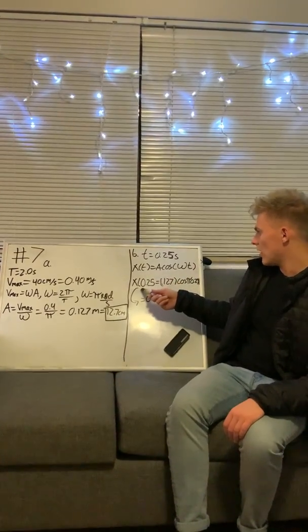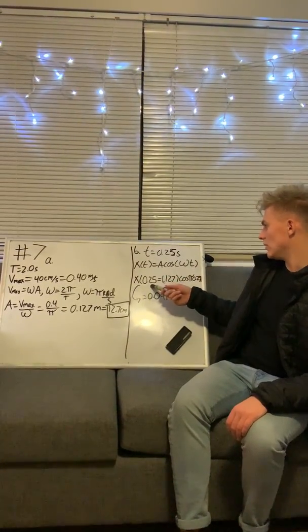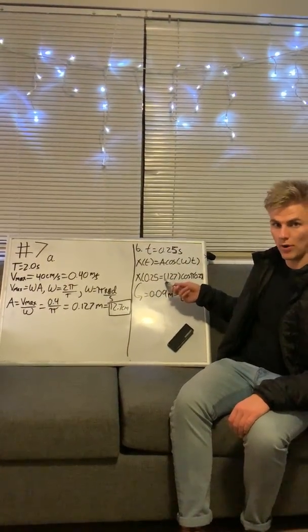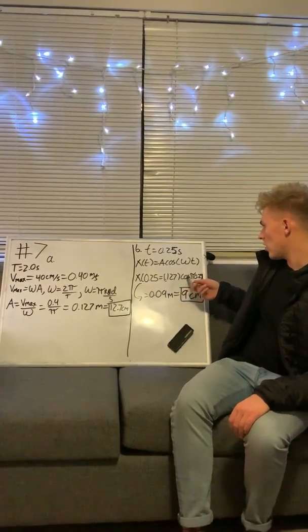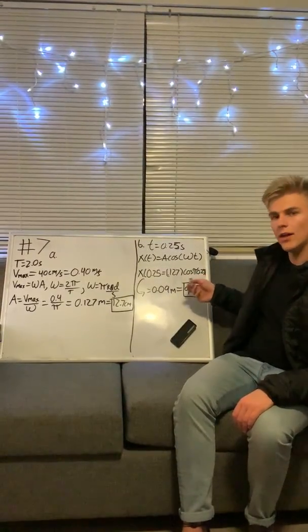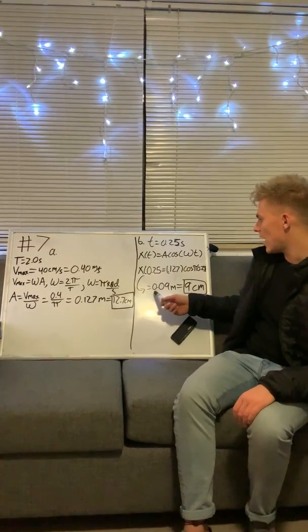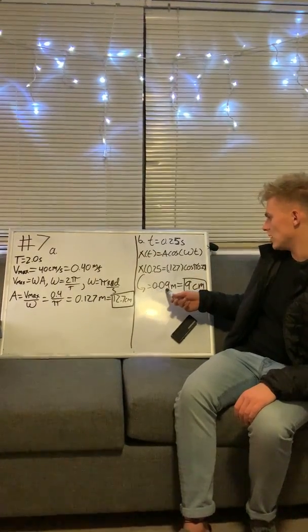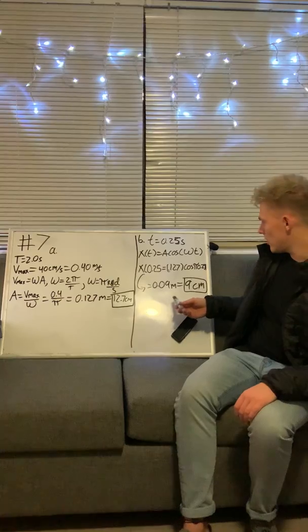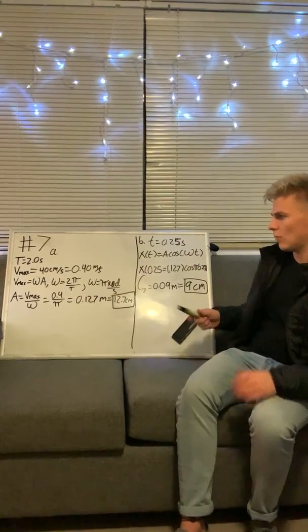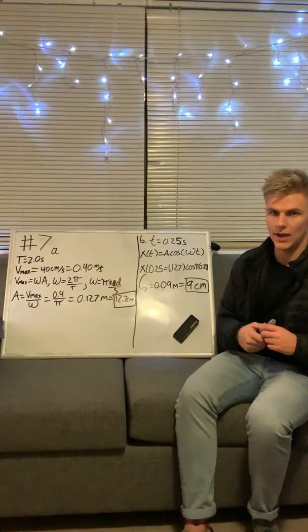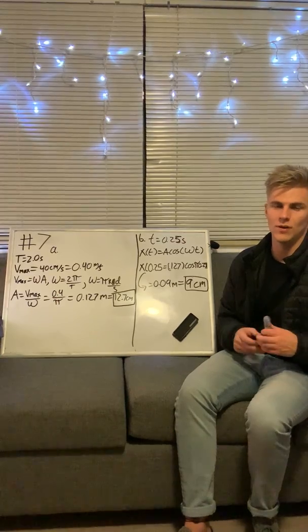When we plug our numbers in, we have X(0.25) equals 0.127 meters times cosine of π times 0.25. When we solve for X, this gives us 0.09 meters, or 9 centimeters, which is the position of the glider at t equals 0.25 seconds.